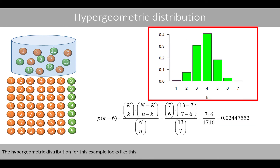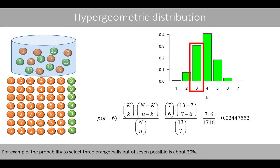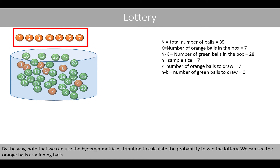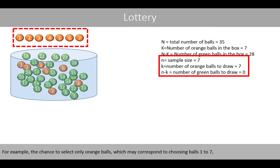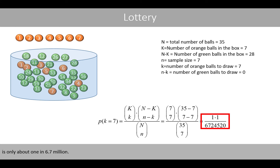The hypergeometric distribution for this example shows each possible outcome as a bar. The height of each bar corresponds to the probability that the 7 balls we select include a given number of orange balls. For example, the probability to select 3 orange balls out of 7 possible is about 30%. Note that we can use the hypergeometric distribution to calculate the probability to win the lottery — treating the orange balls as winning balls. For example, the chance to select only orange balls from a box with 35 different balls is only about 1 in 6.7 million.